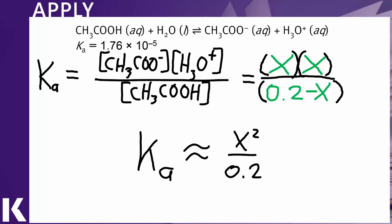So here we go. We are ignoring the value of X in relation to the 0.2. We're assuming that the concentration of the products is much less than the concentration of the reactant. Therefore, we can assume that we can drop that value of X, and that allows us to avoid using a quadratic formula.